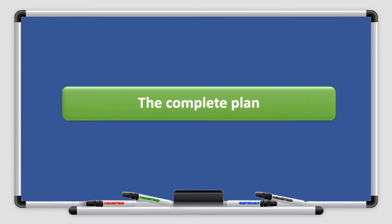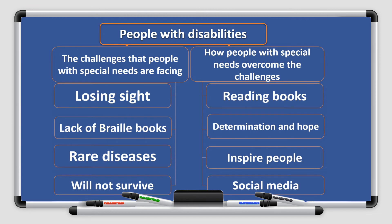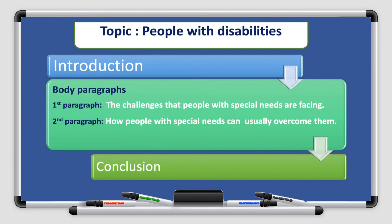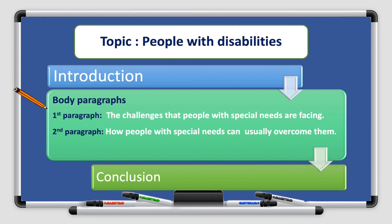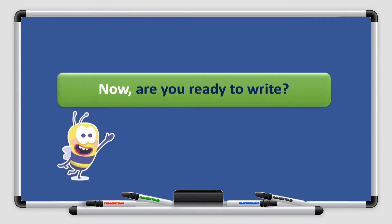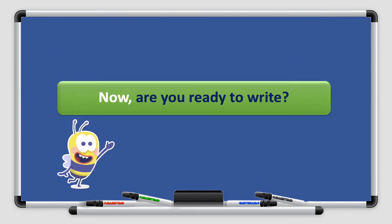The complete plan will look like this. Our topic is people with disabilities. Our first paragraph covers the challenges that people with special needs are facing, and the second paragraph covers how people with special needs can usually overcome them. Now, are you ready to write?